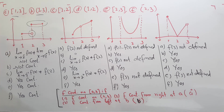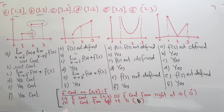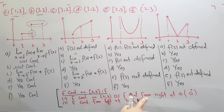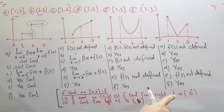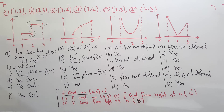Hello everyone. In this video we will discuss the continuity of a function on closed intervals and open intervals. A function f(x) is continuous on a closed interval if the function is continuous on the open interval, and if the function is continuous from the right at point a and continuous from the left at point b.